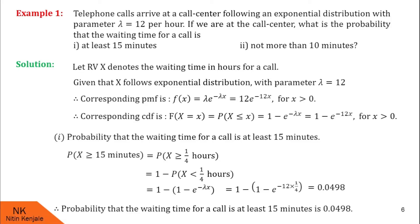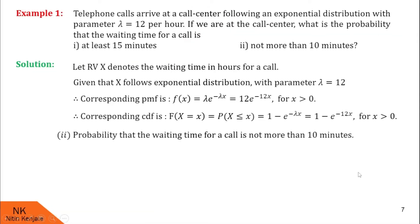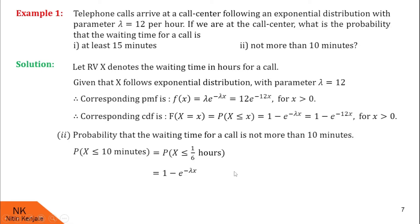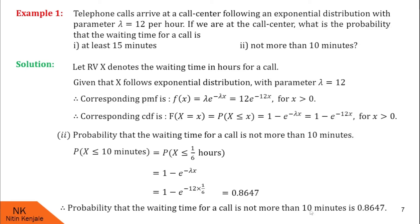Now let us calculate the probability that the waiting time is not more than 10 minutes: P(X ≤ 10 min). Not more than 10 minutes means less than or equal to 10 minutes. We convert 10 minutes to hours: 10 minutes = 1/6 hours. So P(X ≤ 10 min) = P(X ≤ 1/6 hours). Using the CDF formula: 1 − e^(−lambda × x) where lambda = 12 and x = 1/6. After substituting, we get P(X ≤ 10 min) = 0.8647.